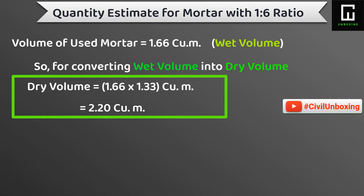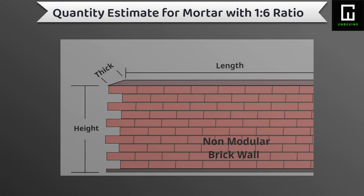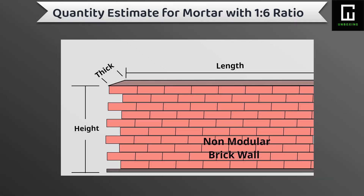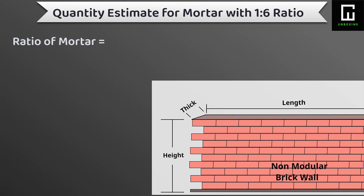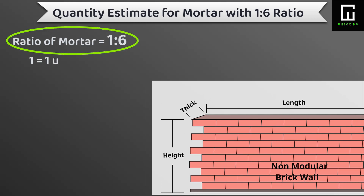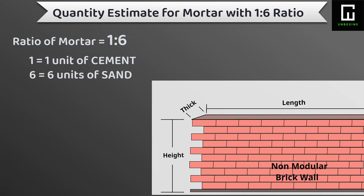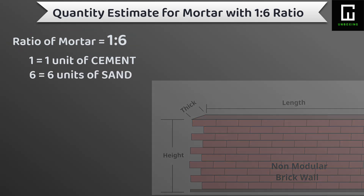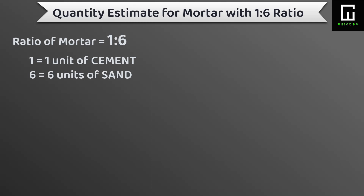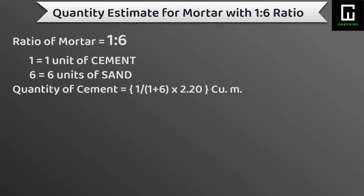Now coming to the main concept: as we are constructing a brick wall, we have to take the ratio of mortar as 1:6, where 1 denotes 1 unit of cement and 6 denotes 6 units of sand. So the quantity of cement required is 1 divided by (1 + 6) multiplied by 2.20, and we get the value as 0.314 m³.